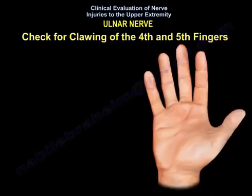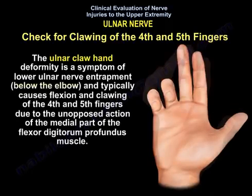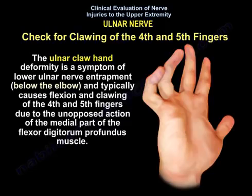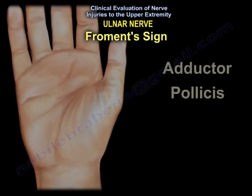This condition can be associated with a claw hand deformity. Always check for clawing of the fourth and fifth fingers. The ulnar claw hand deformity is a symptom of lower ulnar nerve entrapment below the elbow, and typically causes flexion and clawing of the fourth and fifth fingers due to the unopposed action of the medial part of the flexor digitorum profundus muscle.